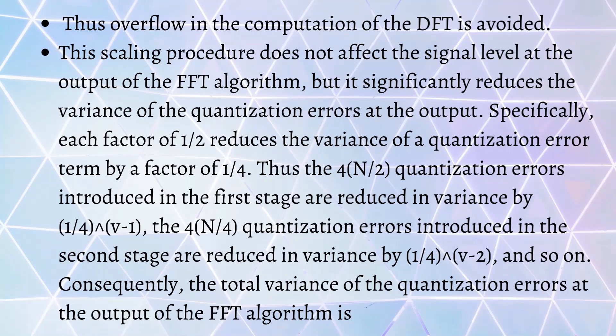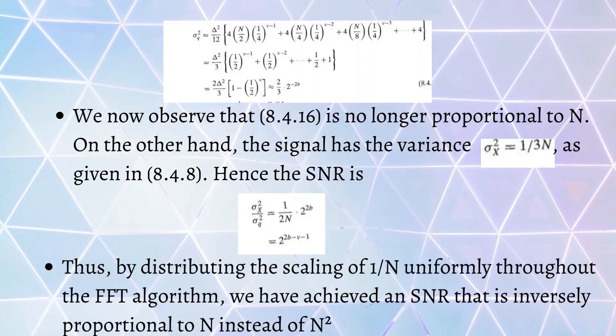This scaling procedure will not affect the signal level in the output of the FFT algorithm, but significantly it reduces the variance of quantization error by a factor of 1/4. Therefore, the 4N/2 quantization errors introduced in the first stage will reduce variance by 1/4^(V-1), and so on. The total variance of quantization errors at the output of FFT algorithm is 2/3 · 2^(-2b).